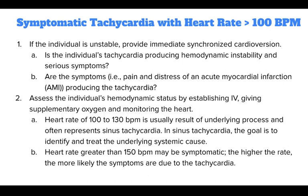For symptomatic tachycardia with a heart rate greater than 100 beats per minute, first, if the individual is unstable, provide immediate synchronized cardioversion. If the individual's tachycardia is producing hemodynamic instability and serious symptoms — assess whether the symptoms, such as pain and distress of an acute myocardial infarction, are producing the tachycardia.